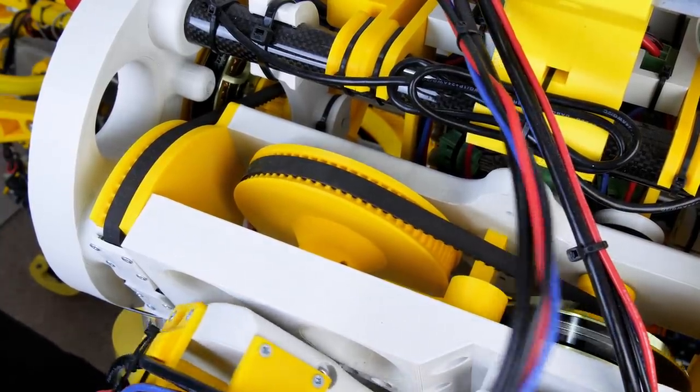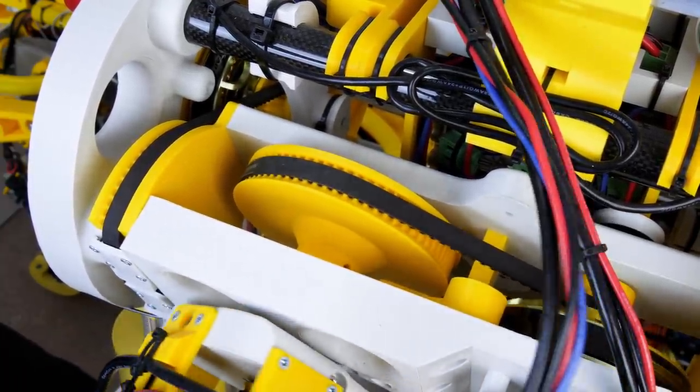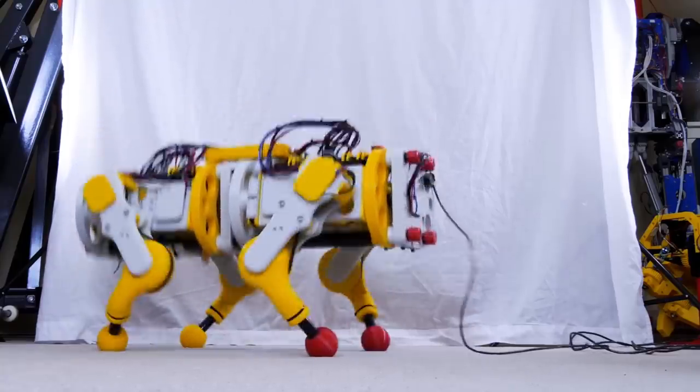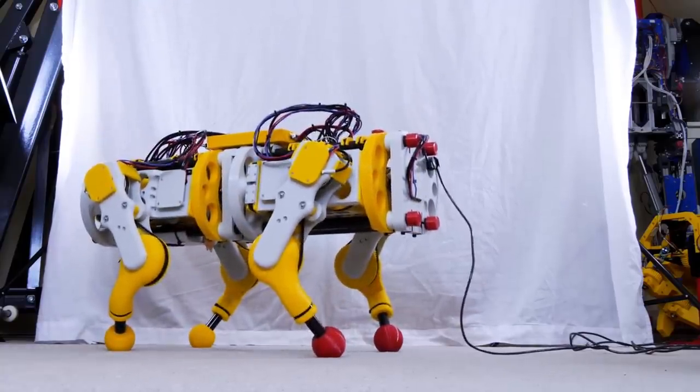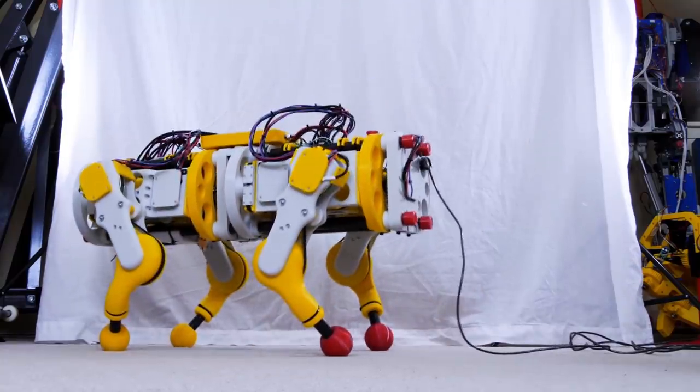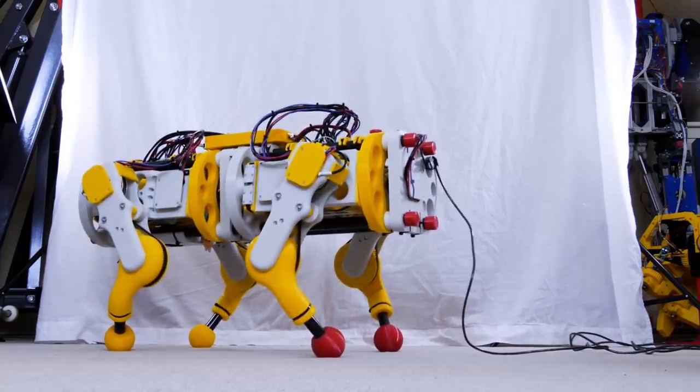One of the problems with OpenDog version 2 is that it only has 5 to 1 belt reductions on each axis. Back-drivability is required for it to work because it makes the motor and controller act like a virtual spring, making the robot more dynamic. However, due to the low reduction ratio, it burns up a lot of power just standing still and even more when moving.